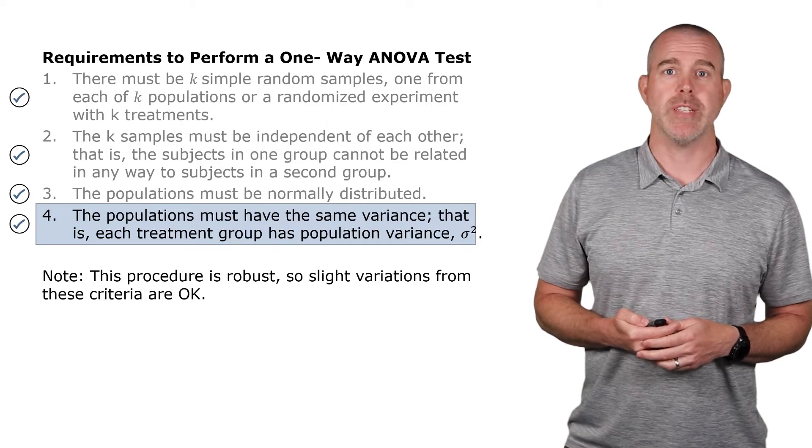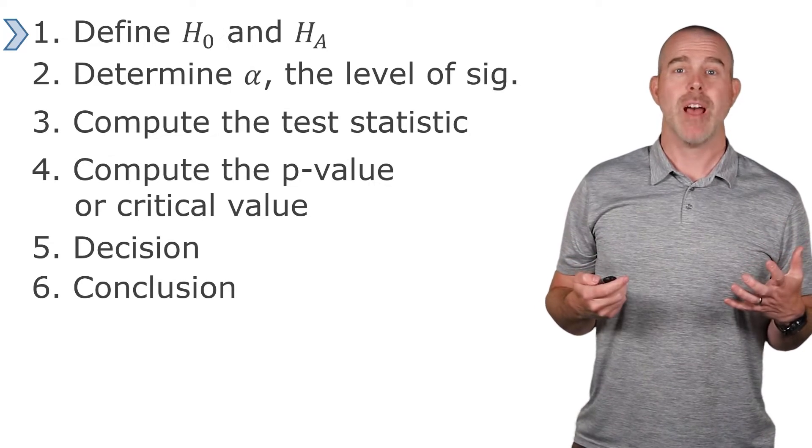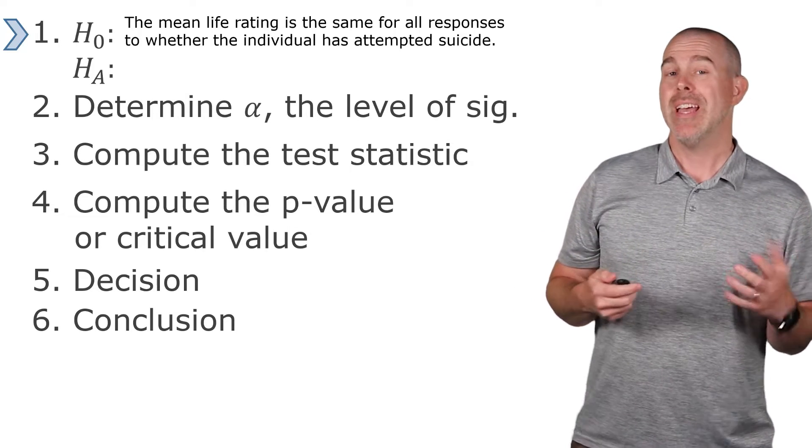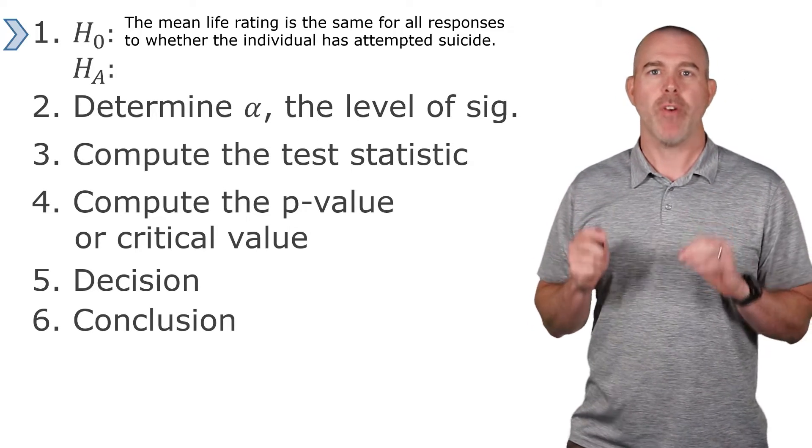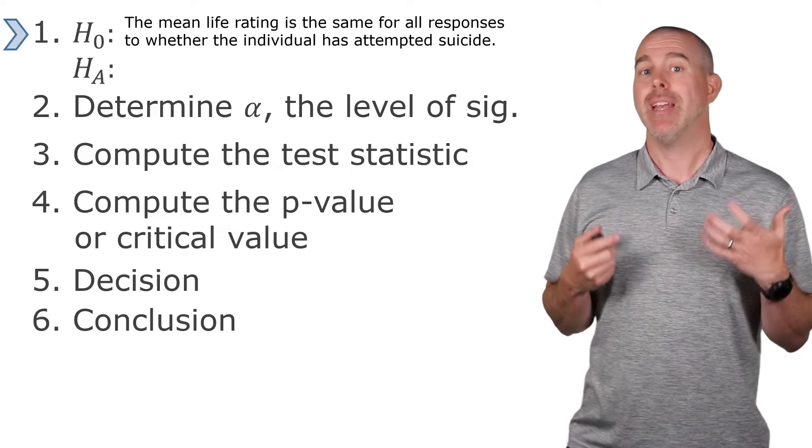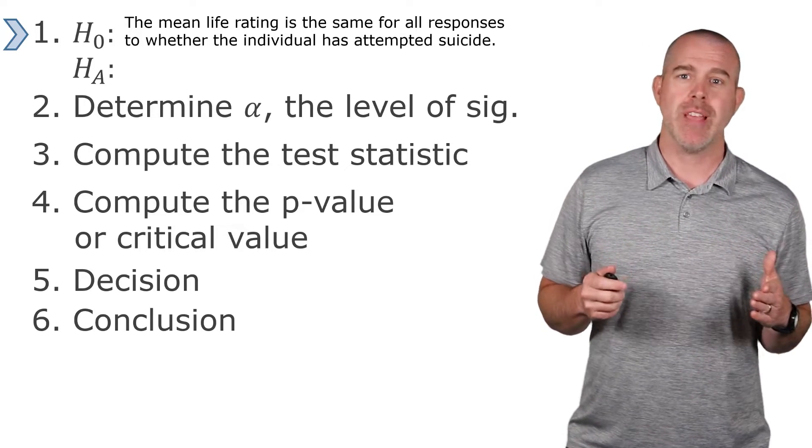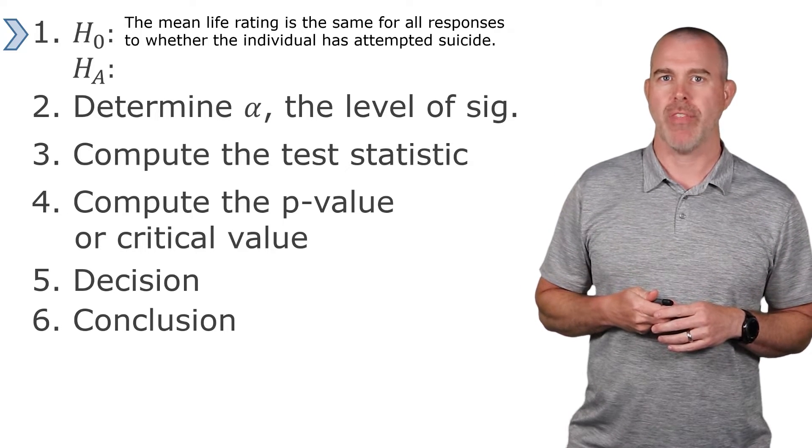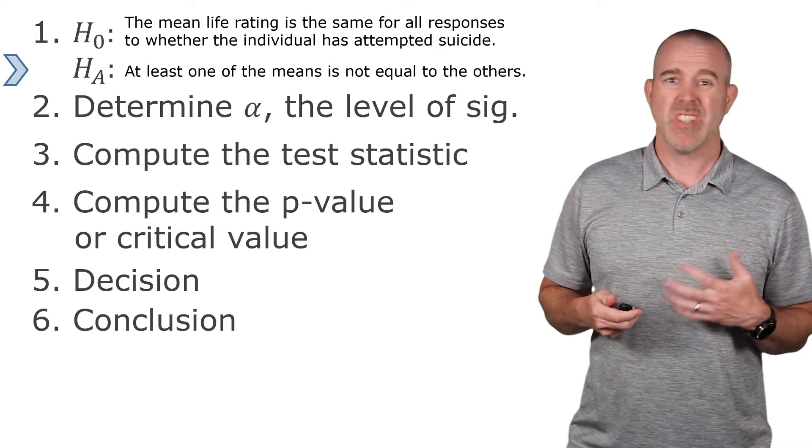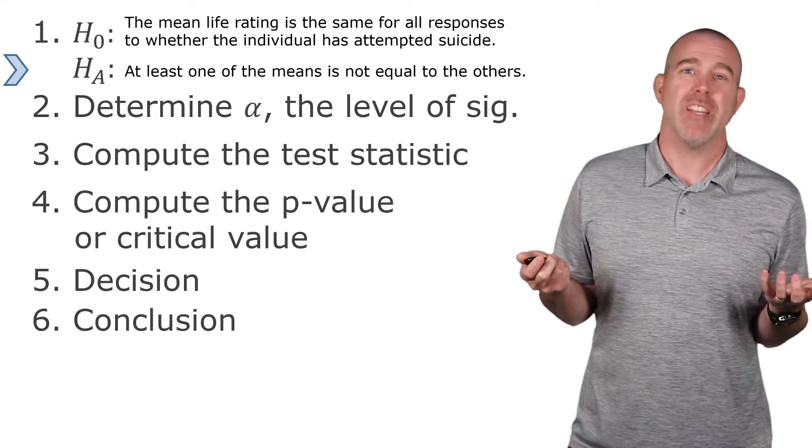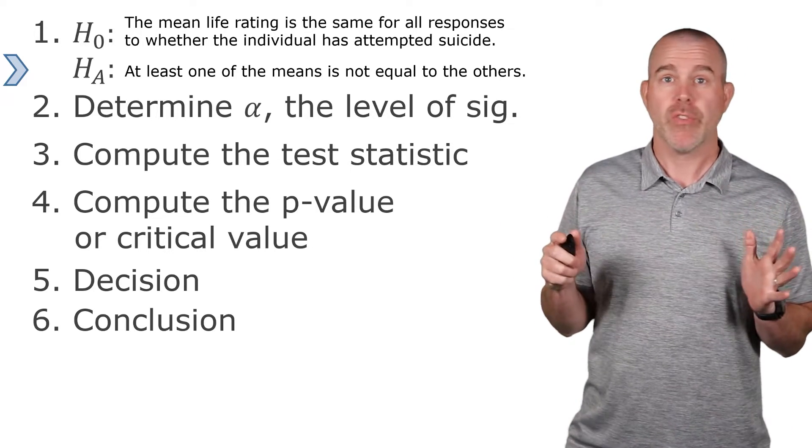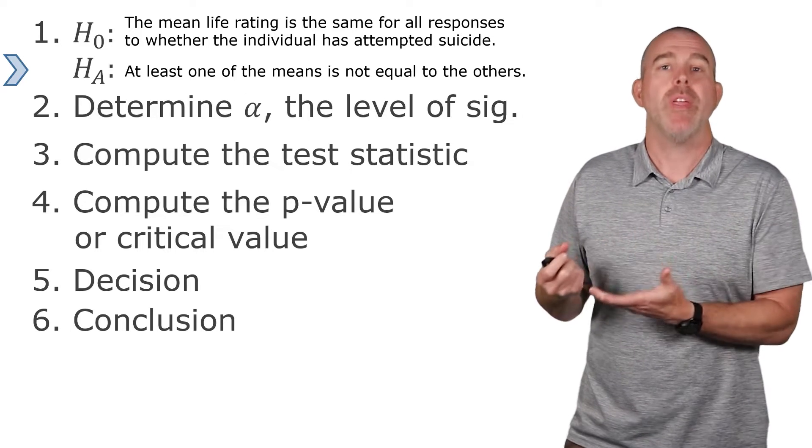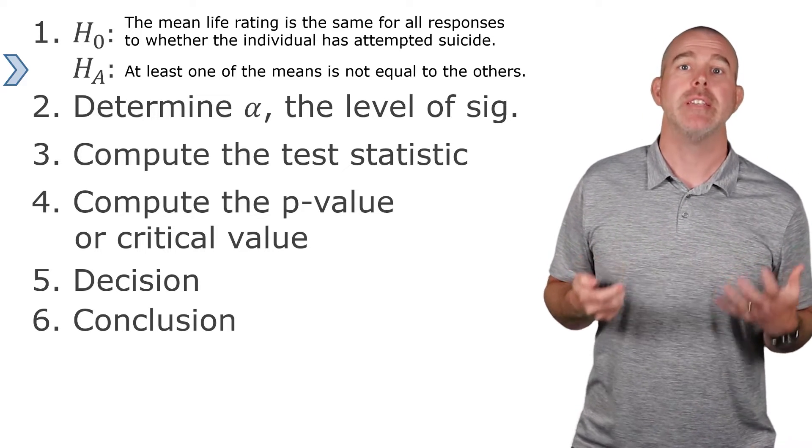So let's dive in and try this hypothesis test. You know the steps by now. Our null hypothesis here is that the mean is the same for all the groups. In this case, it's the mean life rating should be the same whether the individual has attempted suicide and all the different responses they could have there. The alternative is just that at least one of the means is different. The null hypothesis is that they're all the same, then the alternative is that at least one is different.